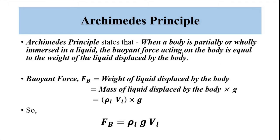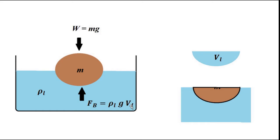This is stated by Archimedes' principle, which says that when a body is partially or wholly immersed in a liquid, the buoyant force acting on the body in the upward direction is equal to the weight of the liquid displaced by the body. The weight of the liquid displaced is simply the mass of displaced liquid multiplied by g — that is ρ_L × V_L × g. So buoyant force equals ρ_L × g × V_L. Remember: ρ_L is the density of the liquid, V_L is the volume displaced, and g is acceleration due to gravity.